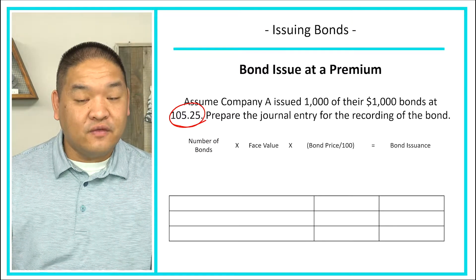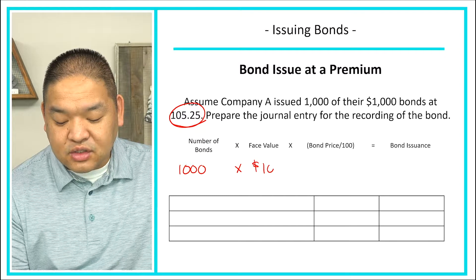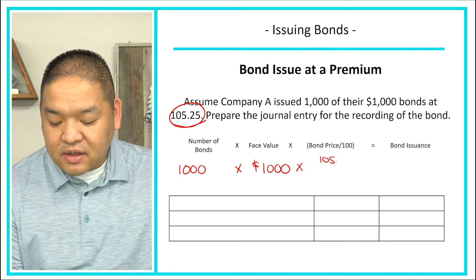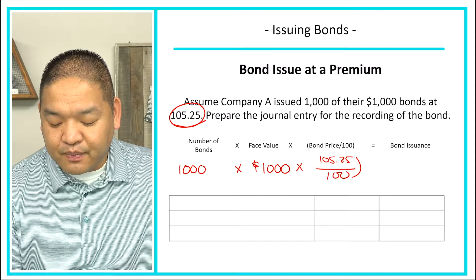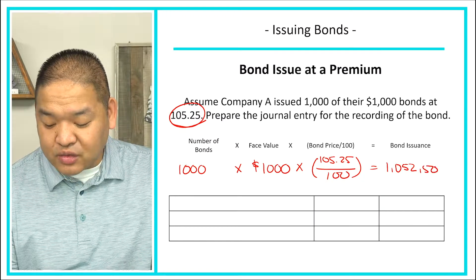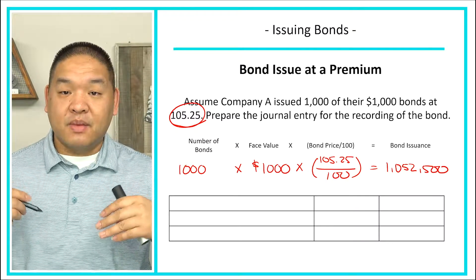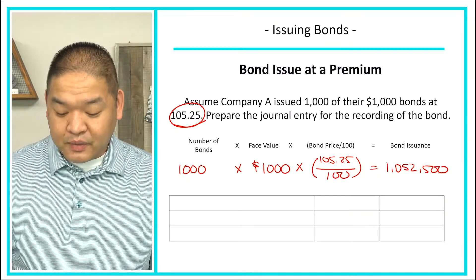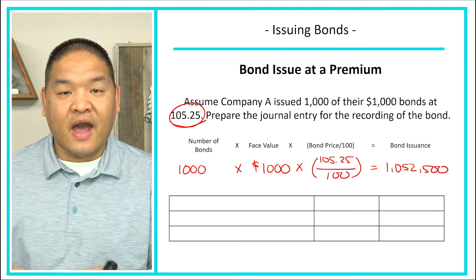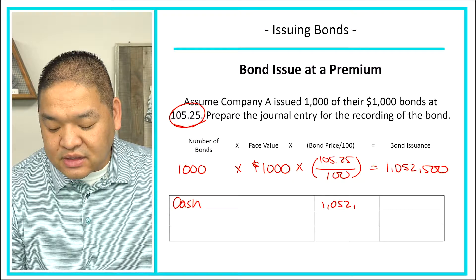We calculate the cash received as: 1,000 bonds × $1,000 × (105.25 / 100) = $1,052,500. So we're going to get $52,500 more from the issuance of our bonds because we're paying a better interest rate than the market. We're going to debit cash in the amount of $1,052,500.